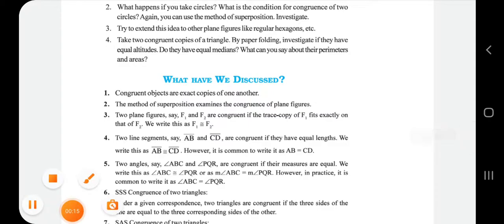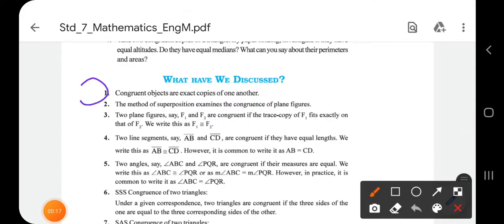What is the meaning of congruent? Congruent objects are exact copies of one another. The method of superposition examines the congruence of plane figures to decide whether they are congruent or not.